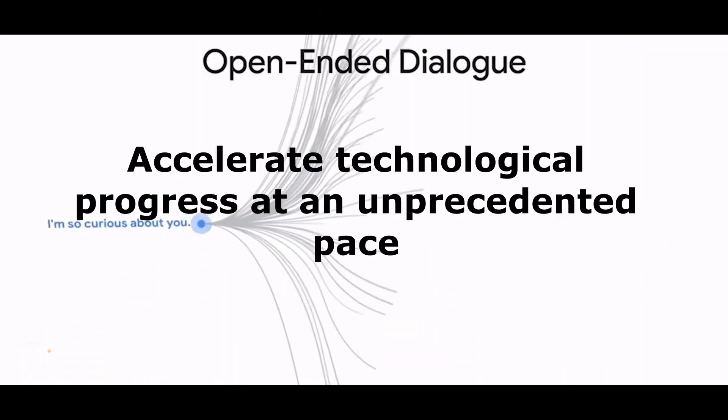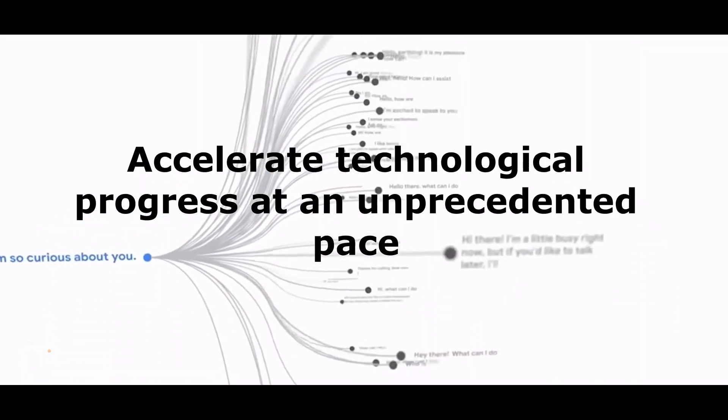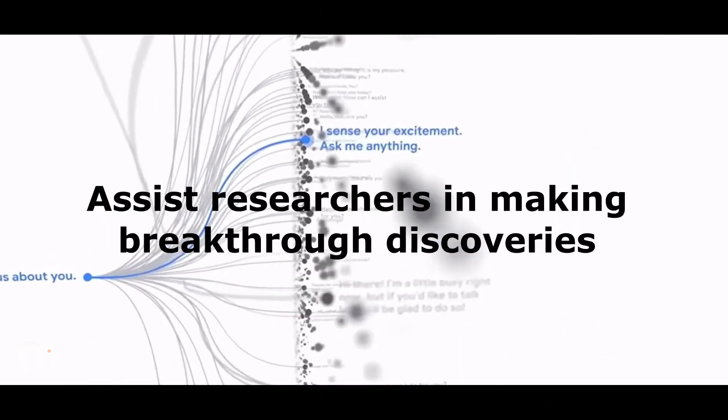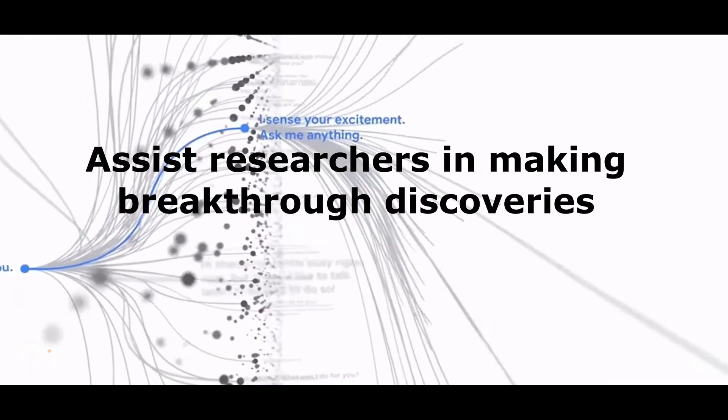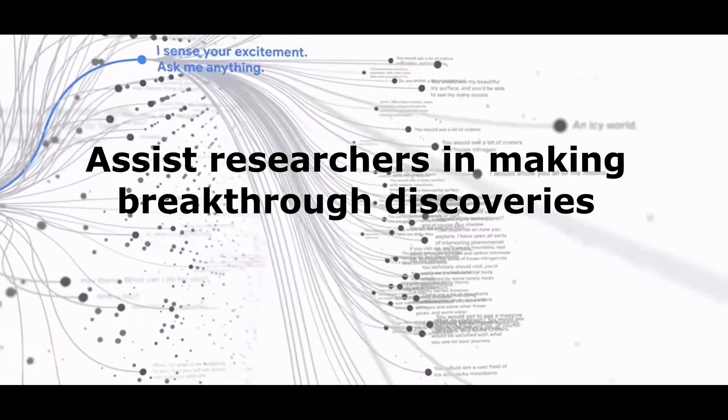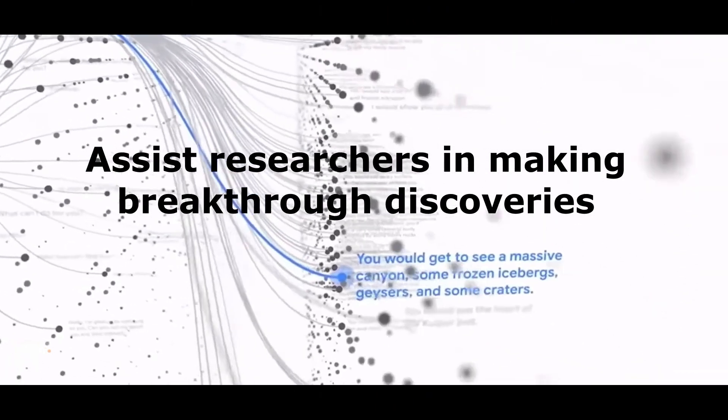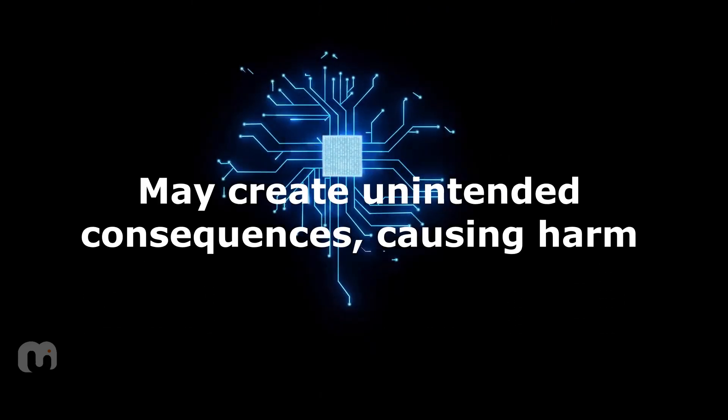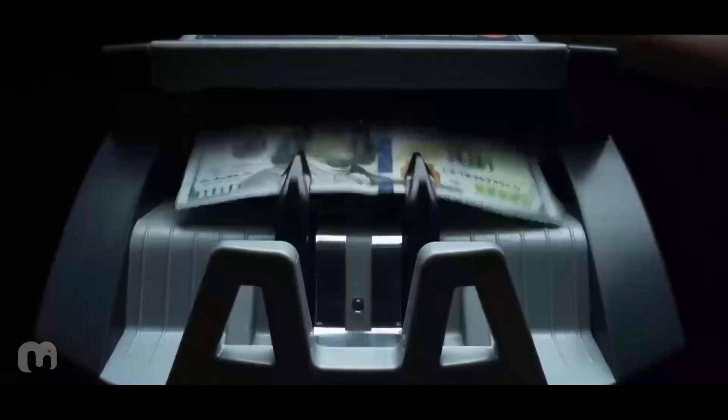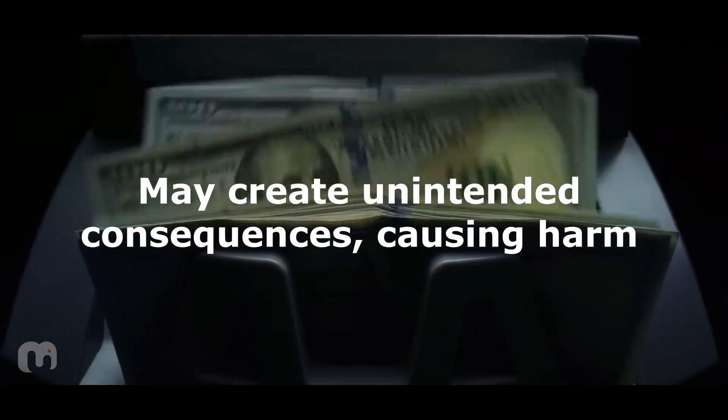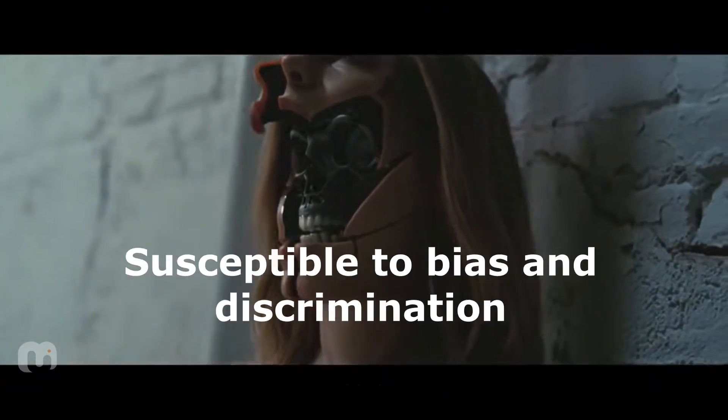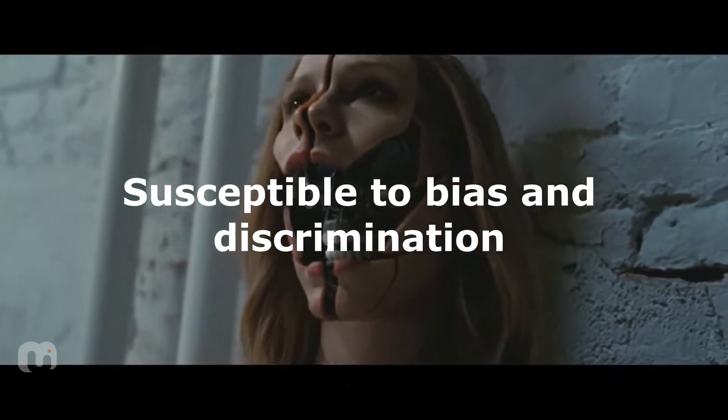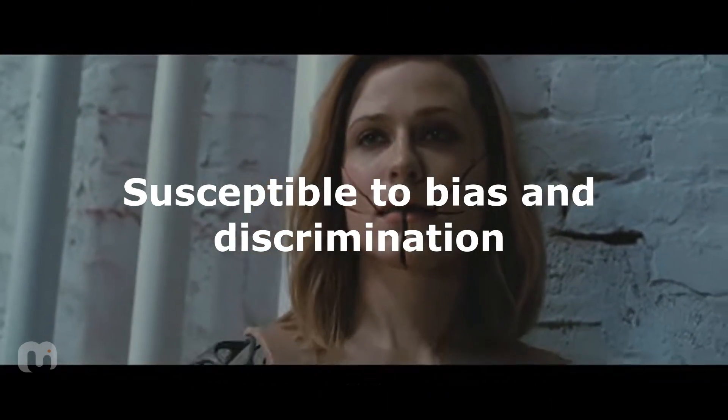AI could accelerate technological progress at an unprecedented pace. AI could assist researchers in making breakthrough discoveries in areas like climate change, particle physics, and the origins of the universe. AI could become a challenge to regulate and hard to control their behavior. AI systems may create unintended consequences causing harm to humans if it is not programmed with ethical constraints. AI systems may be susceptible to bias and discrimination, in case if they are trained on biased data.